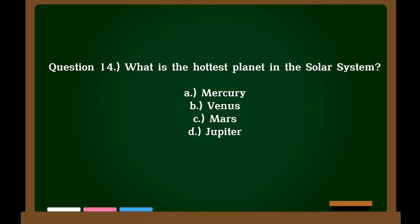Question 14. What is the hottest planet in the solar system? A. Mercury, B. Venus, C. Mars, D. Jupiter. Correct answer: B. Venus.